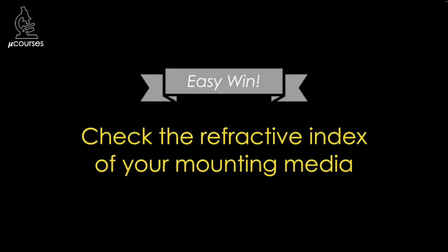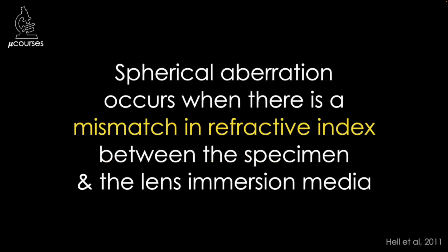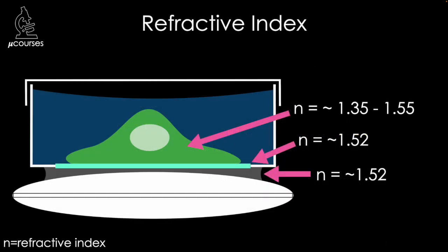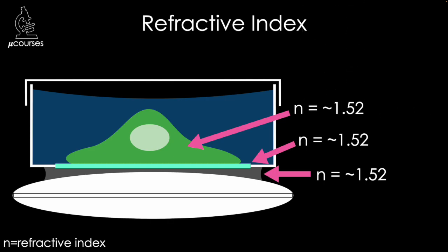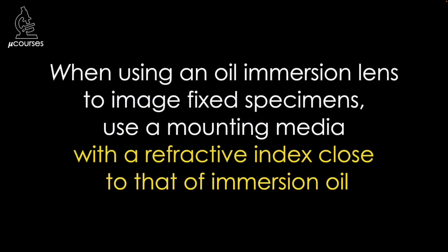Another easy win is to check the refractive index of your mounting media. Spherical aberration can be reduced by matching the refractive index of the specimen to the immersion media. This is tough if not impossible with live specimens, but when using an oil immersion lens to image fixed specimens, you can use a mounting media with a refractive index close to that of immersion oil. See the description box below the video for examples of mounting medias designed to achieve a refractive index similar to that of immersion oil.